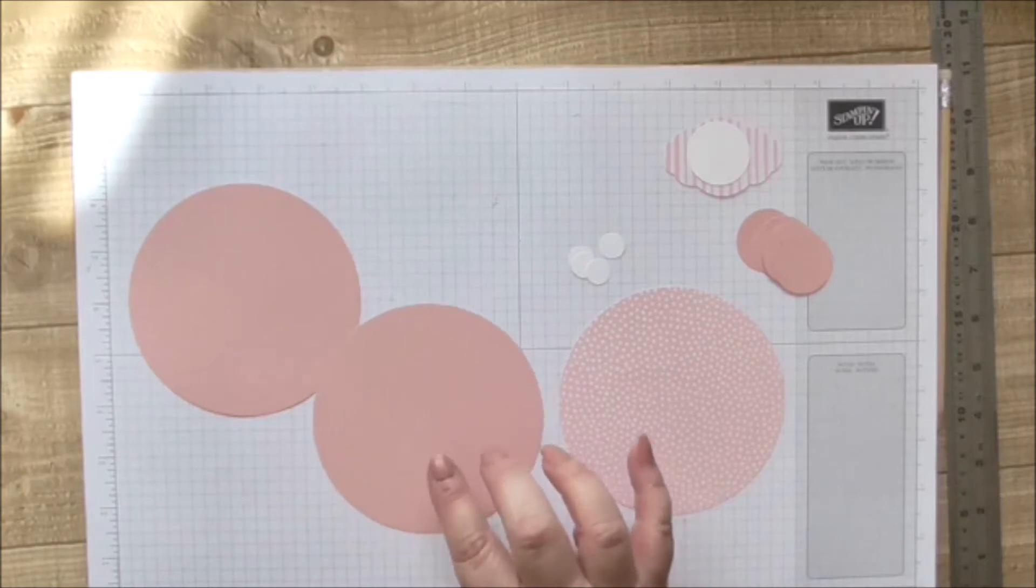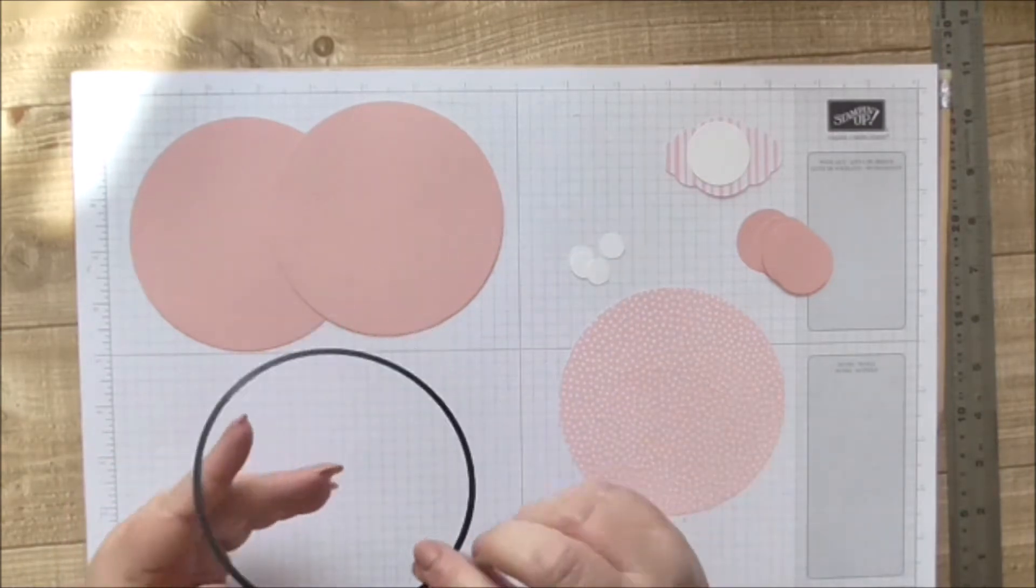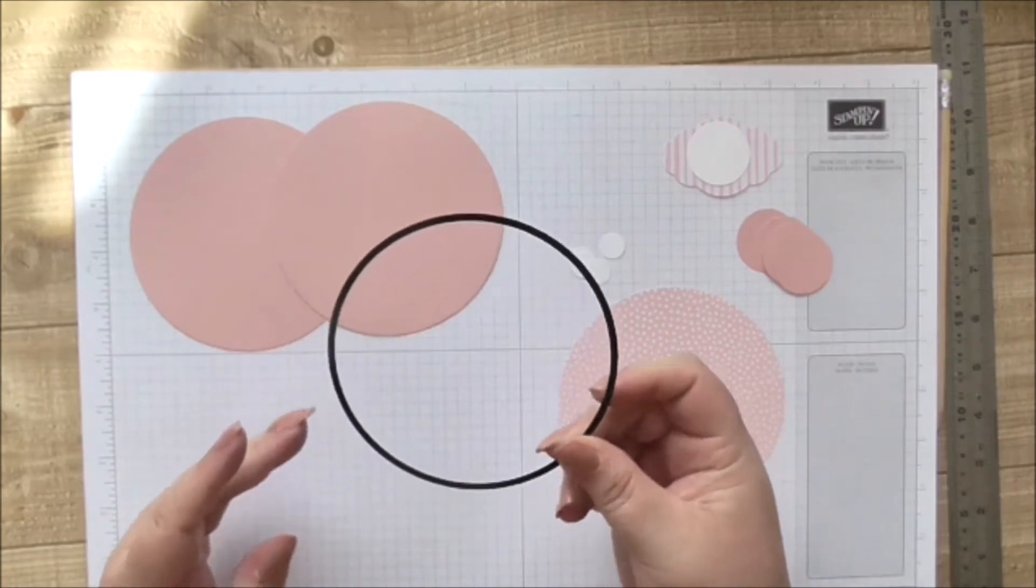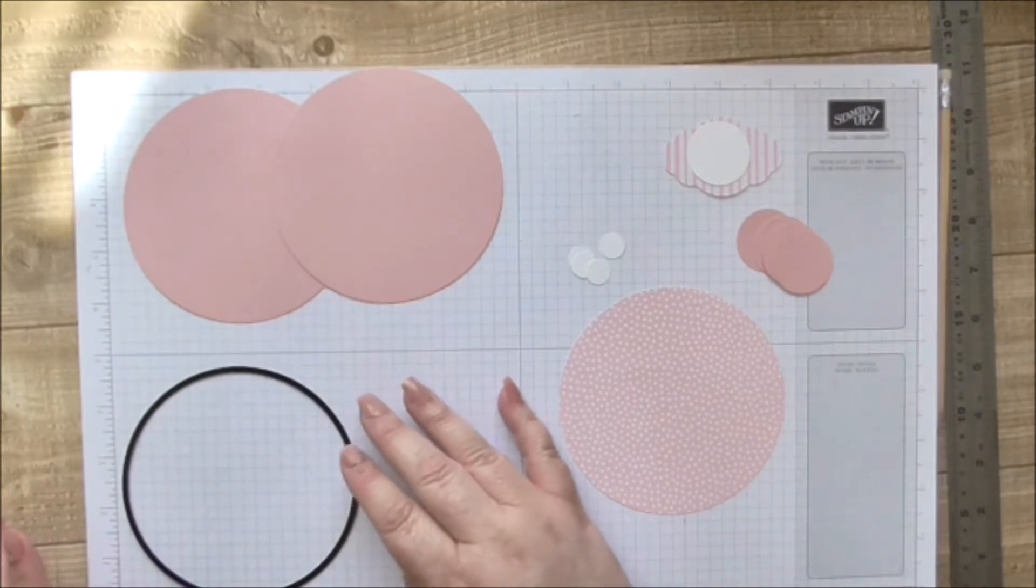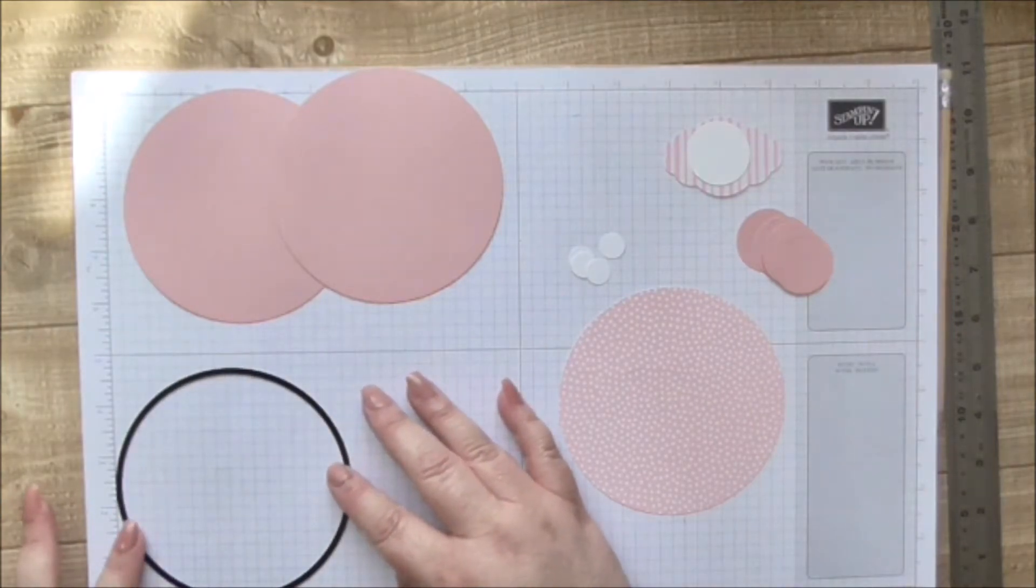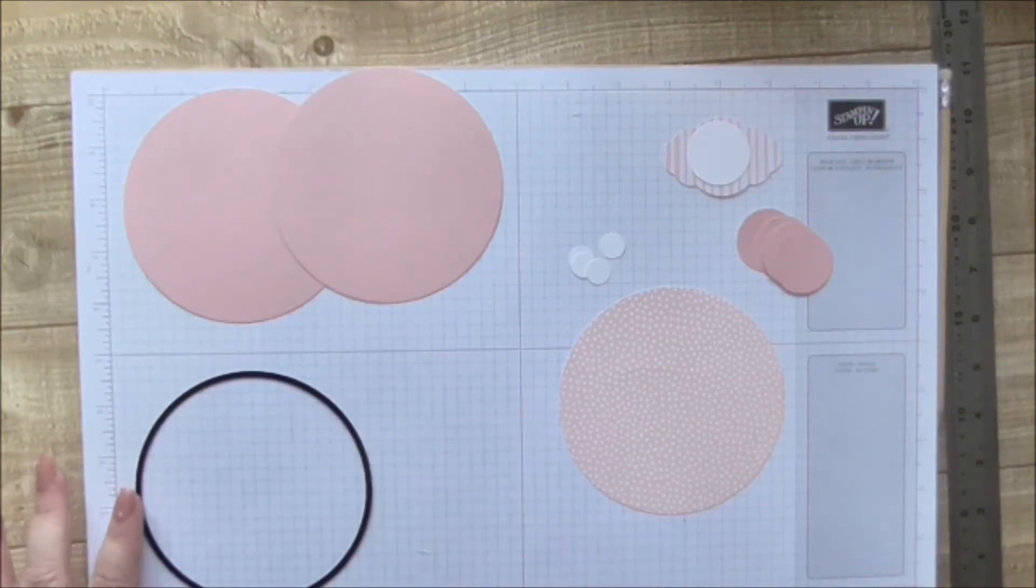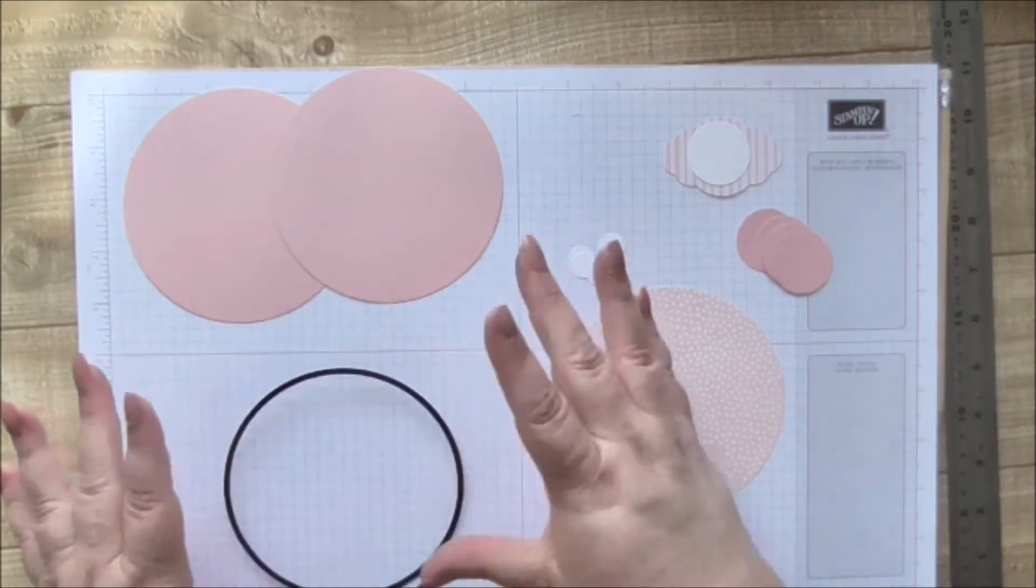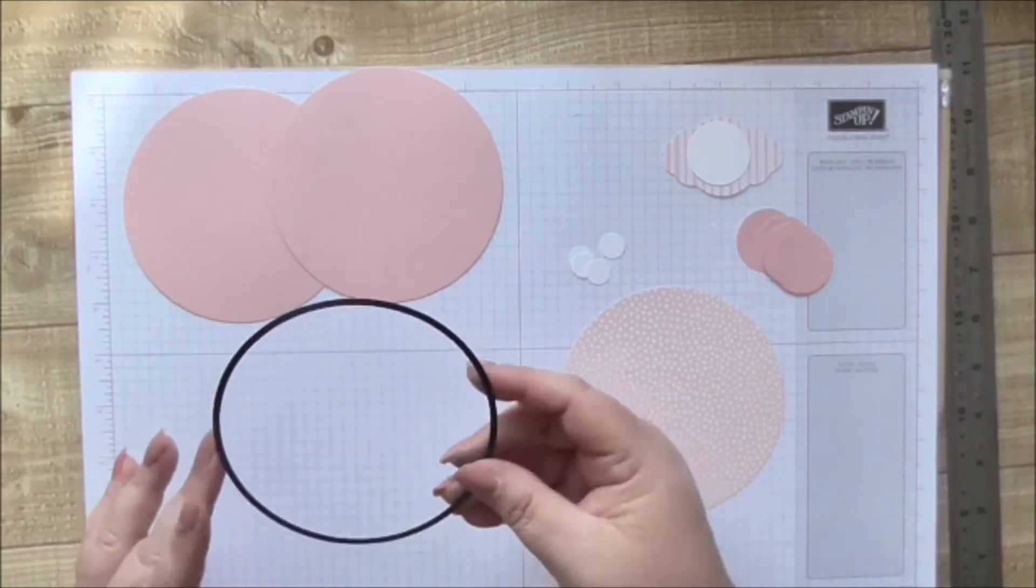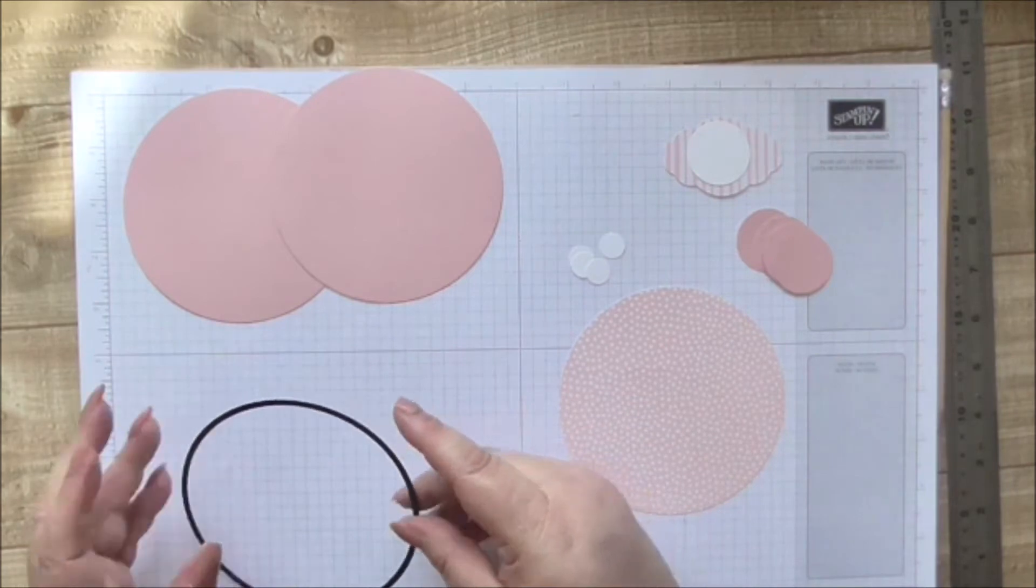Now you can cut this. I don't think Stampin' Up do a circle as big as this, but I got these dies really cheaply online. Really big circle dies which are coming in really handy. This one is four and three quarters in diameter. So if you do big circle projects it's worth investing in some.